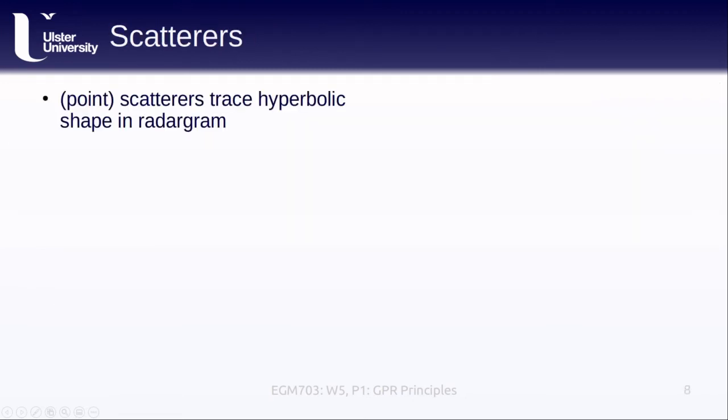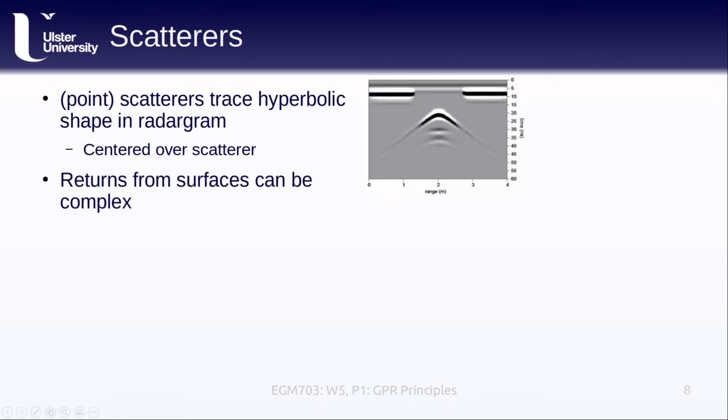A scatterer traces out a hyperbolic shape in a radargram, precisely because of how the radar beam intersects the object's location as the instrument is moving. Point scatterers trace out a hyperbolic shape in the radargram, centered over top of the scatterer. The returns from surfaces can be a bit more complex, though.